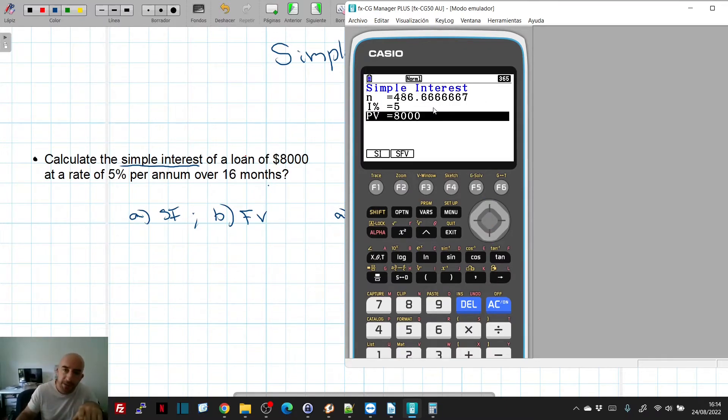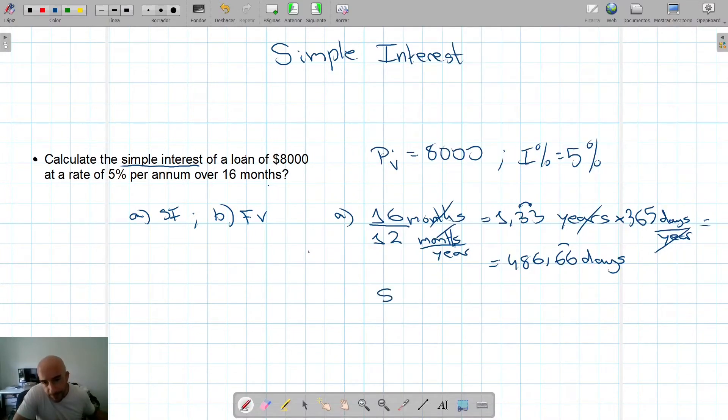So 486.667, 5% per annum and 8,000. And we're asked for the simple interest. So we just click on SI, minus 533.33. So that simple interest is minus, why minus? Because it's money I have to pay. So that only shows if the money, plus the money comes towards me, minus the money is money I have to pay.